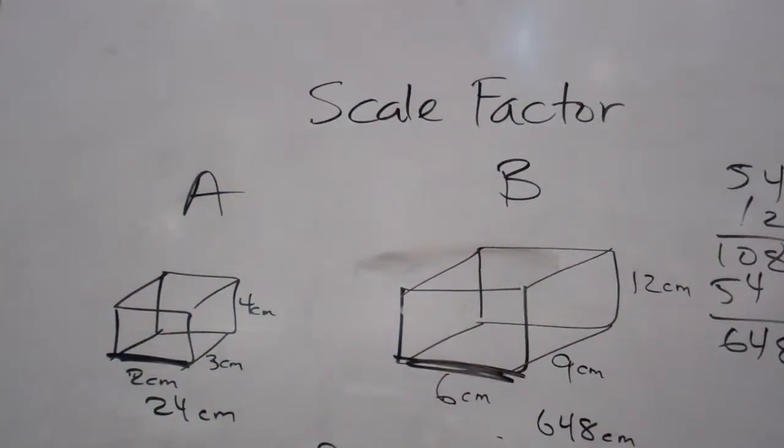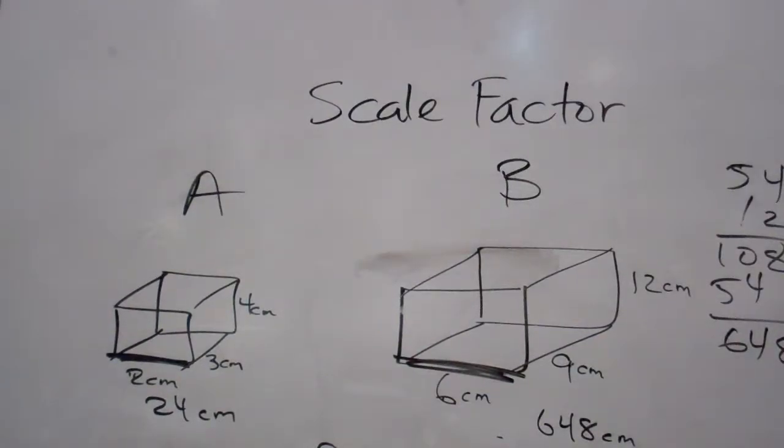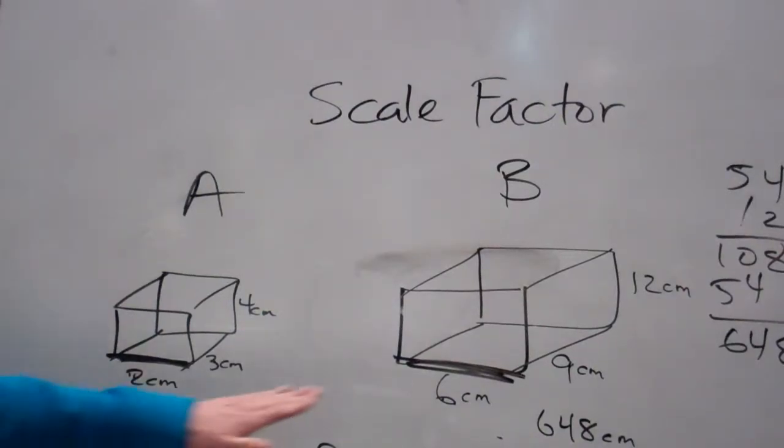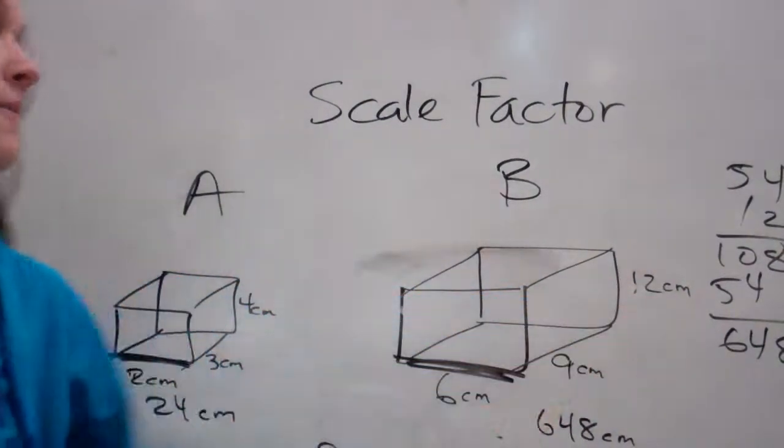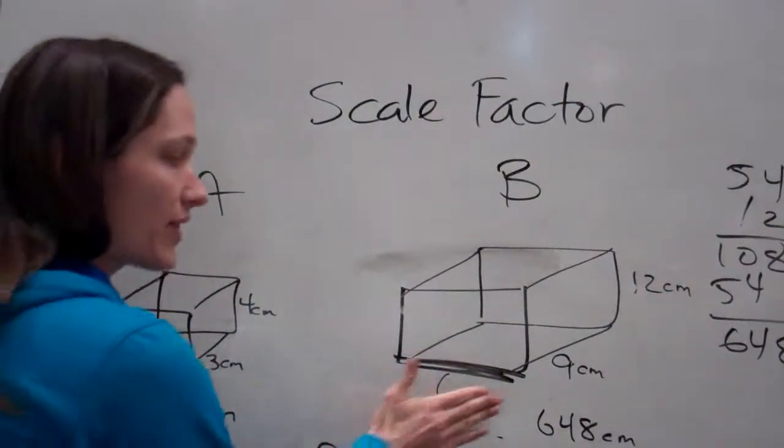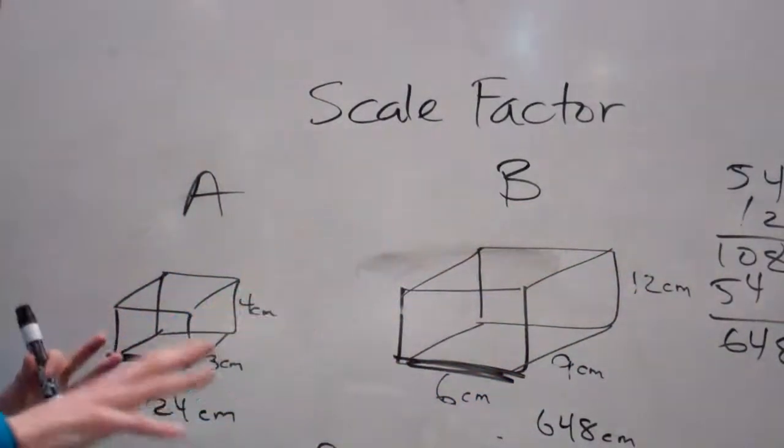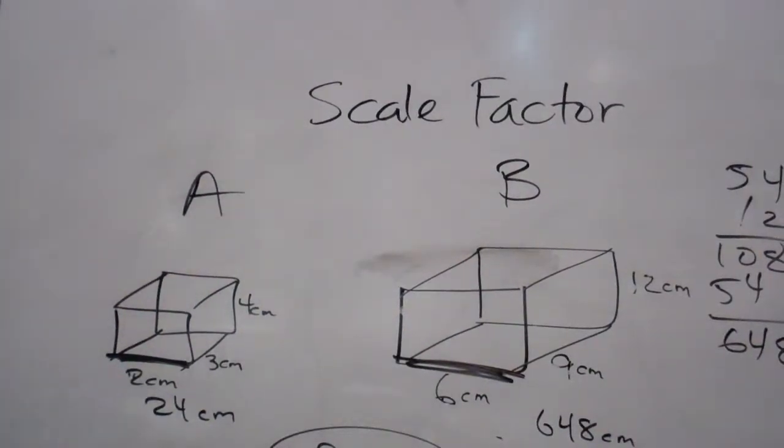It's going to be 27 times. And let me show you an easier way to figure this out. This is really cool. So, everybody finish writing that down. I'm going to show you something really neat. But I'm going to show you an easy way so that you don't have to multiply this times this times this every time. So, watch this.